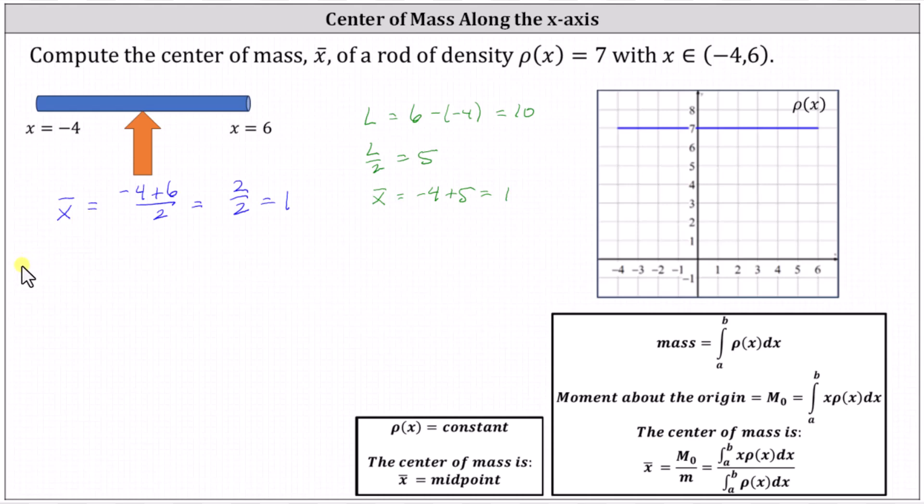Let's first determine the moment about the origin, which equals the integral from negative four to six of x times rho of x, which is x times seven or seven x.